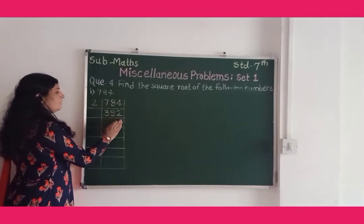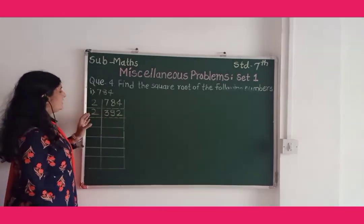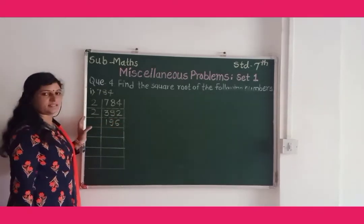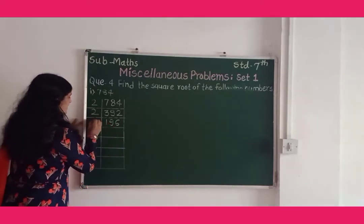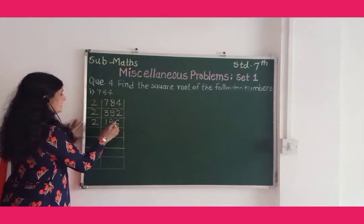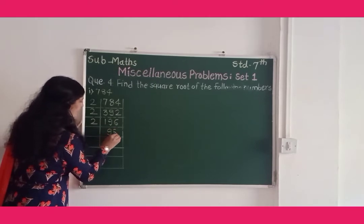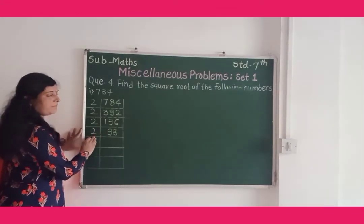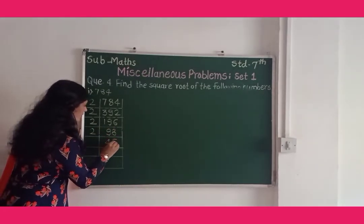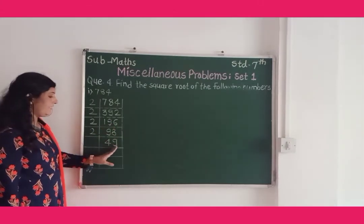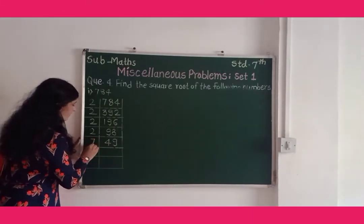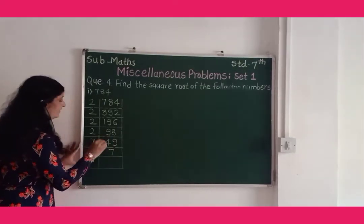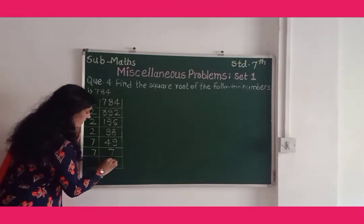Then 392 is also divisible by 2. When 392 is divided by 2, we get the answer 196. Then 196 is divisible by 2. When 196 is divided by 2, we get 98. Then 98 is divisible by 2. When 98 is divided by 2, we get 49. Then 49 is divisible by 7. When 49 is divided by 7, we get 7. Then again 7 is divisible by 7, and we get the answer 1.